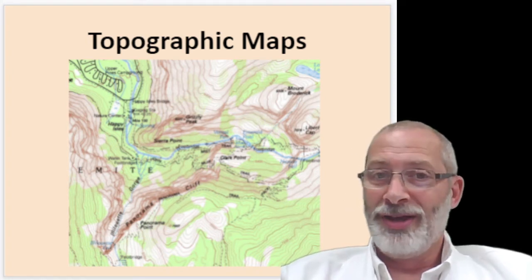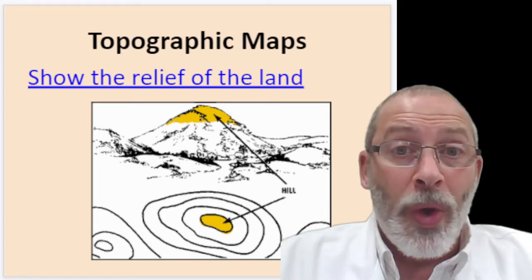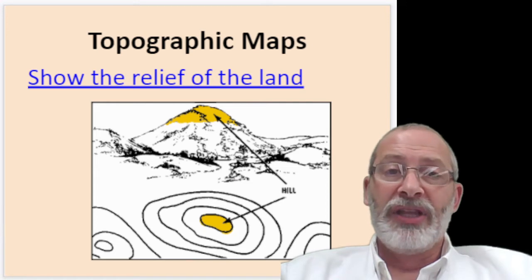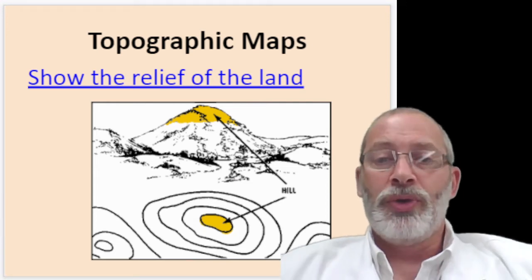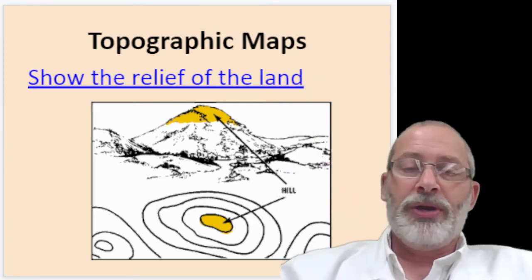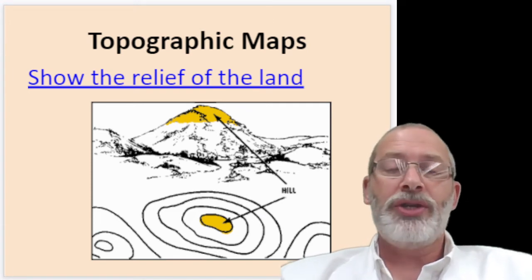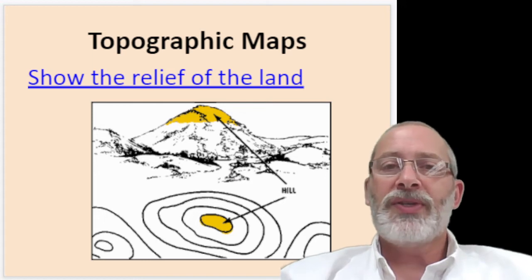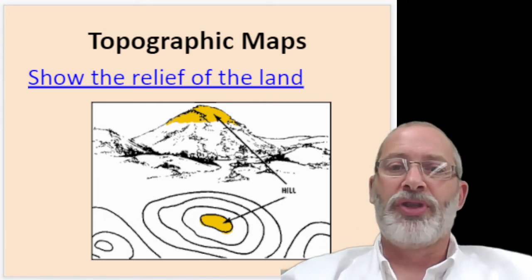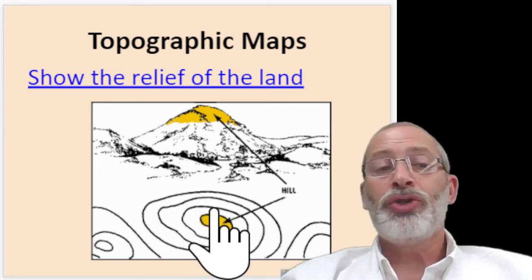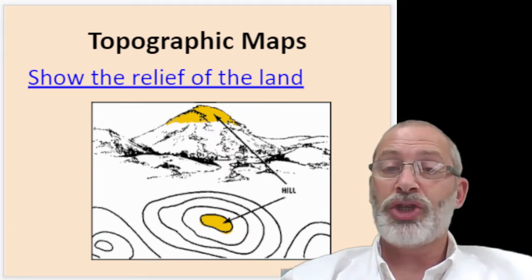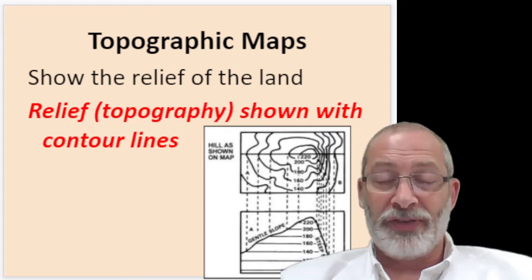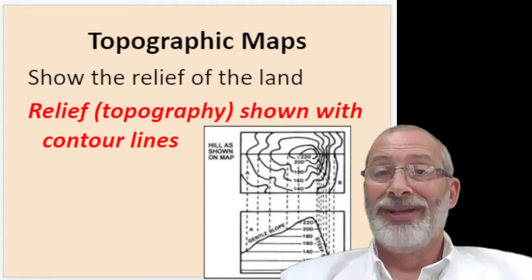So what does a topographic map do? A topographic map shows the relief of the land. Basically, a topographic map takes map location a step further into the third dimension — it shows you, in a two-dimensional representation, what the three dimensions of a location actually are. It shows relief, otherwise known as topography, with lines that we call contour lines.